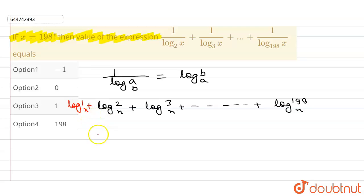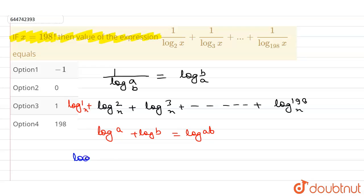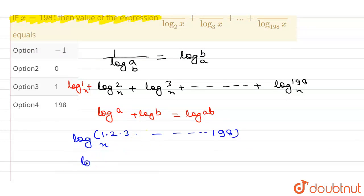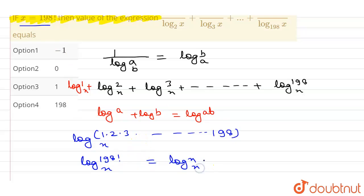We know the formula that if we have log of a plus log of b, then we can write it as log of a into b. Similarly, I can write this entire term as log of 1 into 2 into 3 into dash dash dash into 198 to the base x. I can write this as log of 198 factorial to the base x, and 198 factorial is given as x.